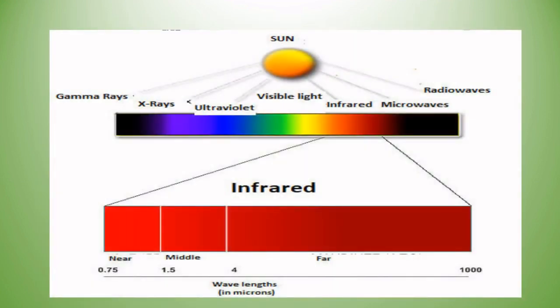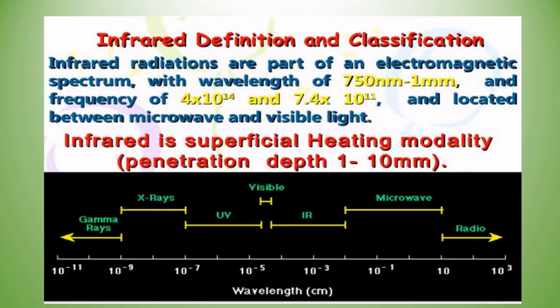Now let us see about infrared. Infrared radiation is part of the electromagnetic spectrum with wavelength of 750 nanometers to 1 millimeter and frequency of 4×10¹⁴ to 7.4×10¹¹ Hz, located between microwave and visible light.